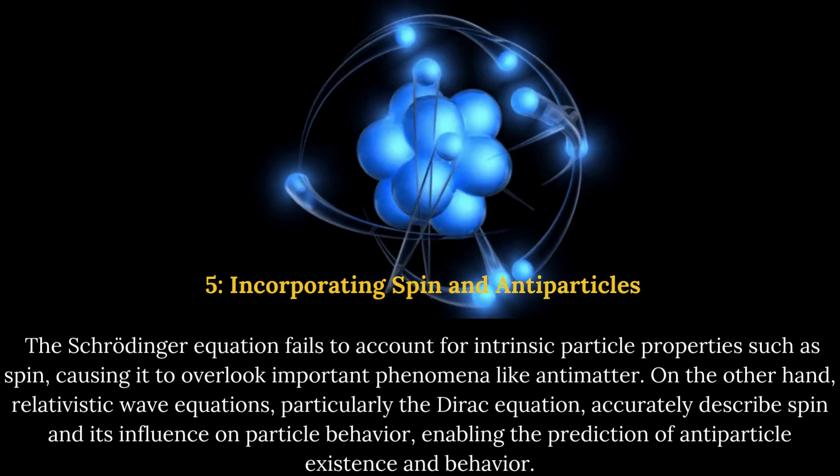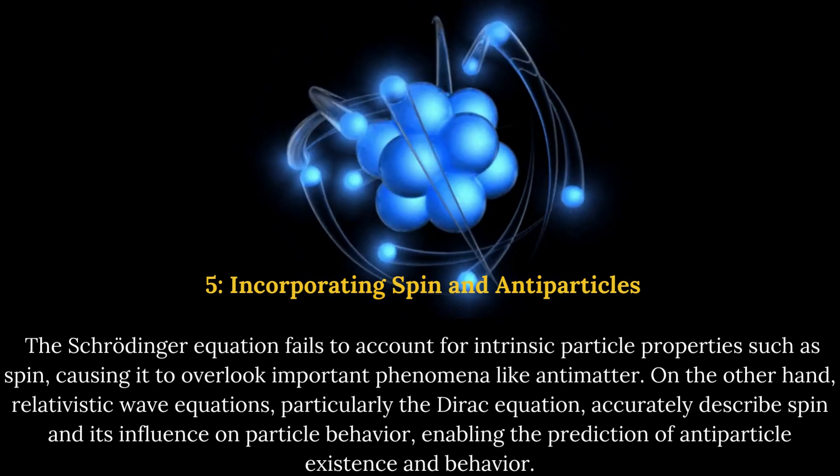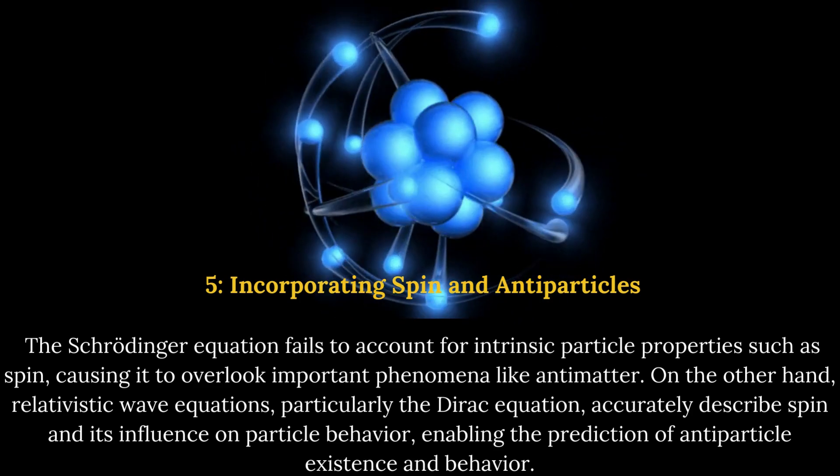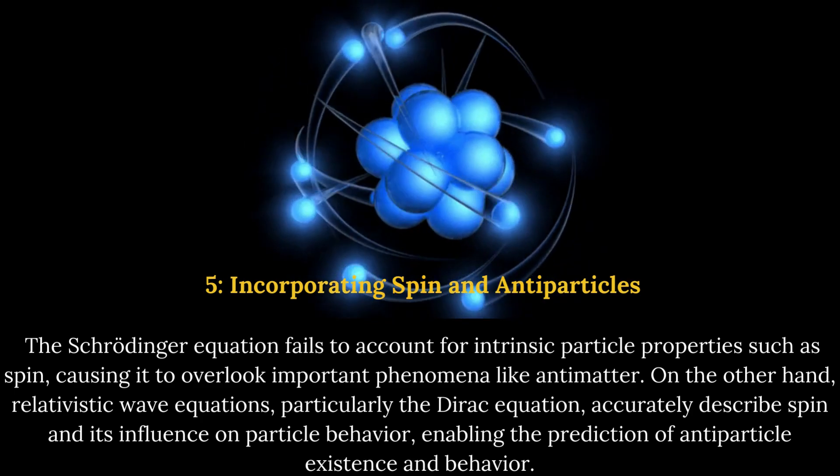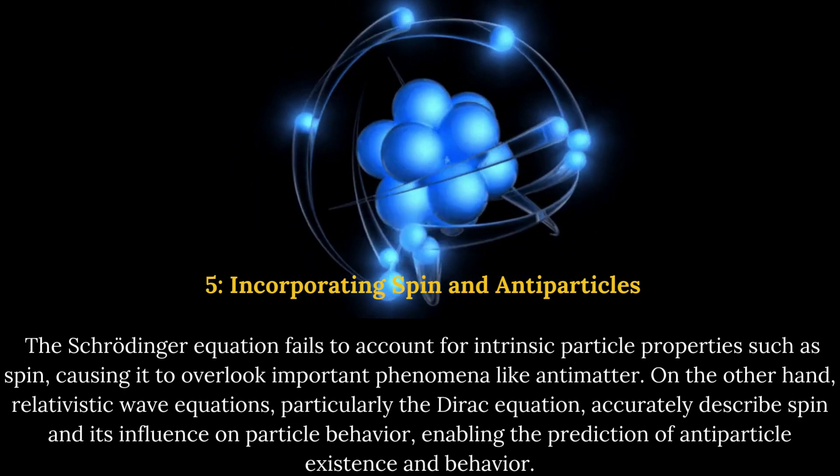5. Incorporating spin and antiparticles. The Schrodinger equation fails to account for intrinsic particle properties such as spin, causing it to overlook important phenomena like antimatter.